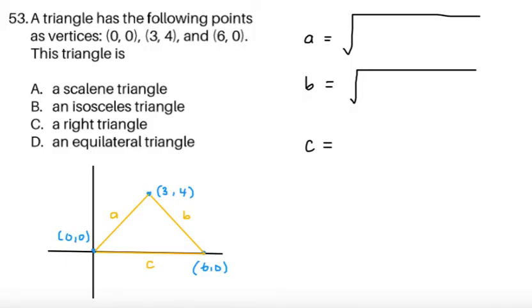A triangle has the following points as vertices: (0,0), (3,4), and (6,0). This triangle is... and we have four possible choices for the triangle. Note that we're given scalene triangle, isosceles triangle, a right triangle, or an equilateral triangle as the choices. It was very logical for us to get the sides and then see what triangle it is. Let's try to get the side lengths of the triangle.